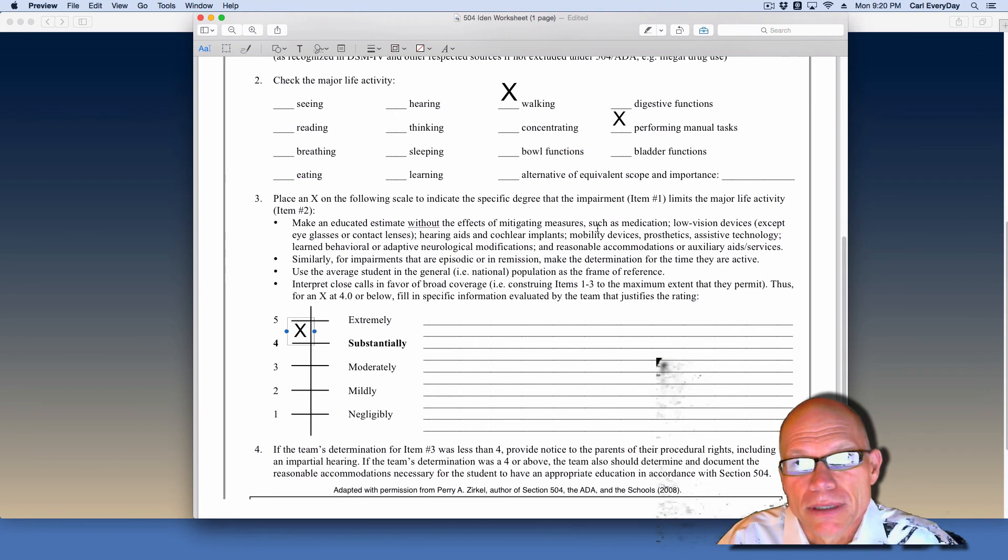Without those things, without the additions and any accommodations already being made, to what degree does the impairment affect the major life activity. And if it is at the substantial level, then the child qualifies for 504.